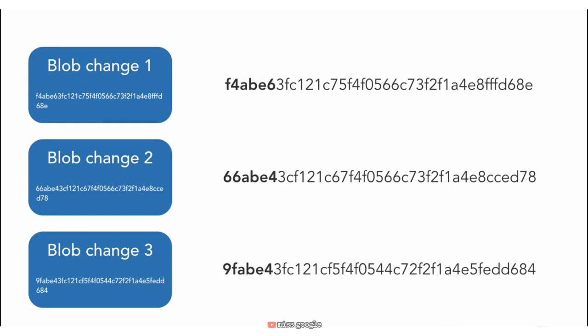Most of the time you'll see that Git abbreviates these commit IDs to just the first six or so characters, which makes it easier for you to reference these commits instead of using that full 40-character-long ID. As your project commit history increases, Git may need to add another character to the abbreviated version so that it keeps everything unique.